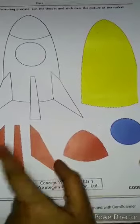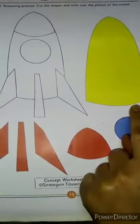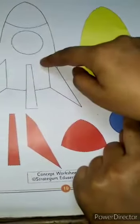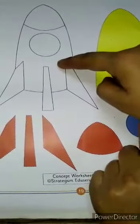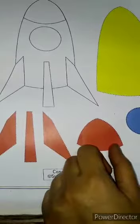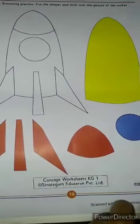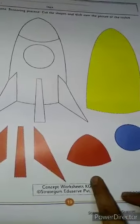What are we going to do here? We are going to cut the rocket parts and stick it on it. But kids, do remember, you don't use scissors. You take help of your parents for this worksheet. Okay kids?